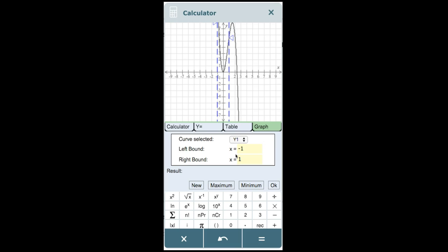Then we enter in our left and right bound. We know that x can't be less than 0, so type 0 for left bound. And then it looks like the maximum goes past 2.5 or around 2.5, so we'll try 2.5 for our right bound. Then click maximum.